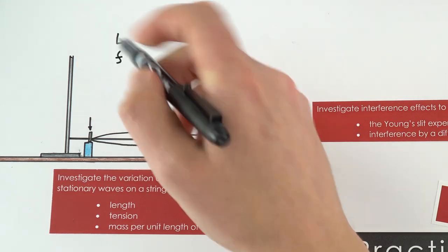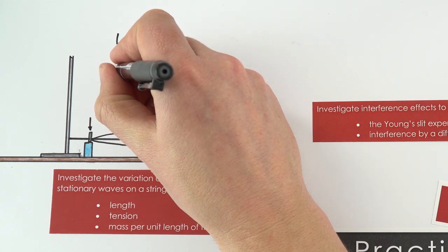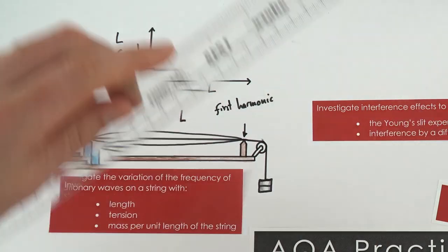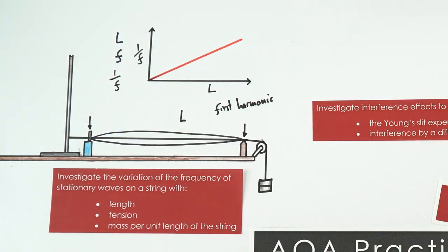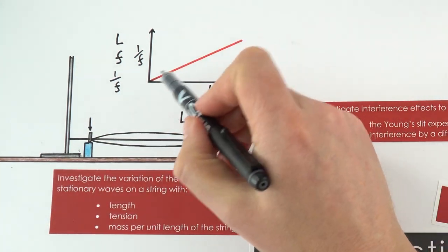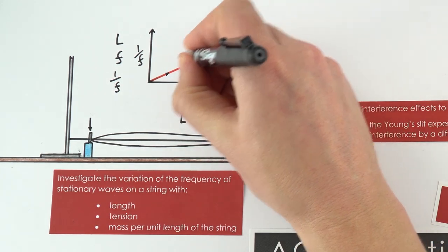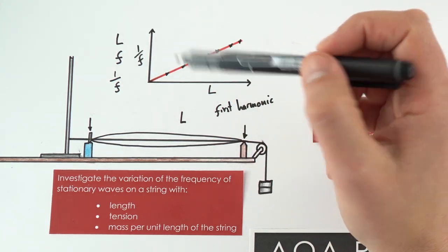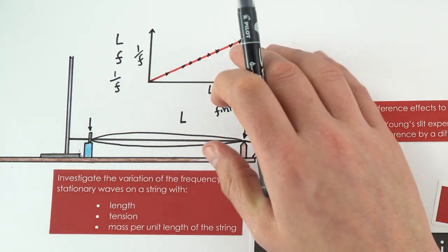Once you've done that, you can measure the frequency of that stationary wave off the signal generator, and then find values for 1/f. You plot the data on a graph, and you should find that the data falls on a straight line that goes through the origin. You need to take as many data points as possible - preferably at least seven different readings. You should also always take repeated values and use those to find a mean, then plot on a graph and use the gradient or intercept for something more meaningful.